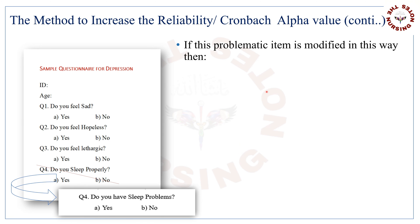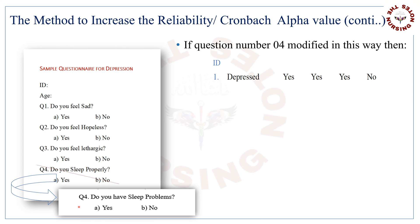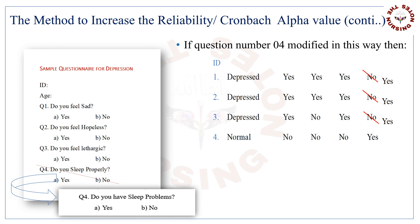If this problematic item is modified, the new question becomes: 'Do you have sleep problems?' If this question is asked of a depressed person, the depressed will reply yes, and similarly other depressed respondents will also reply yes instead of no. If this question is asked to a normal person, there is an increased chance that the reply will be no, and other normal individuals are likely to respond in the same manner, except in some exceptional cases.